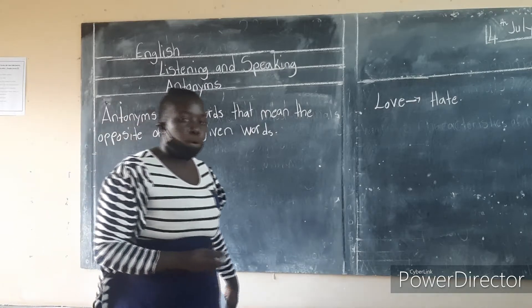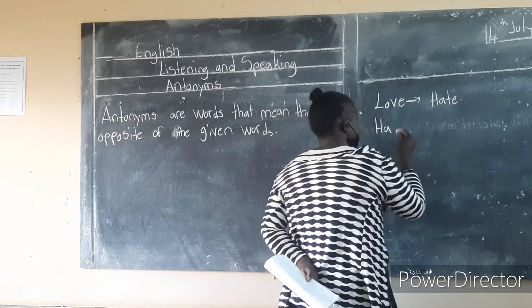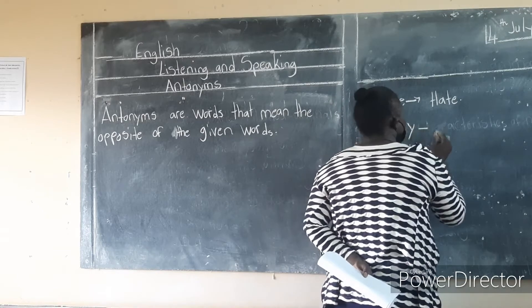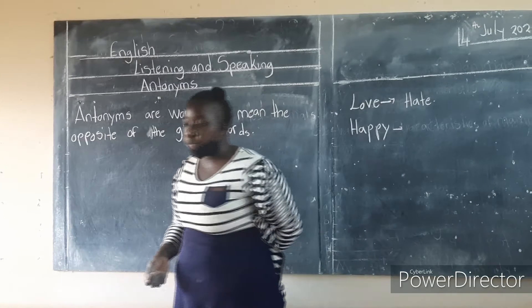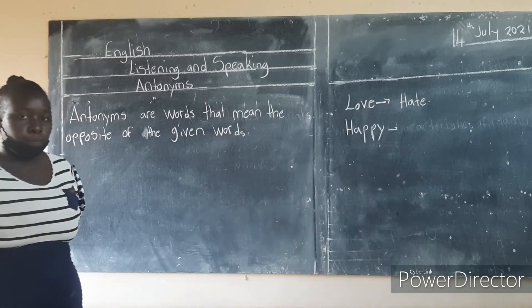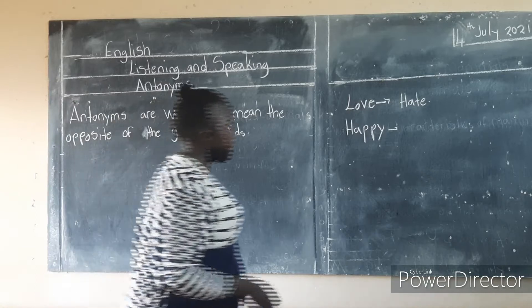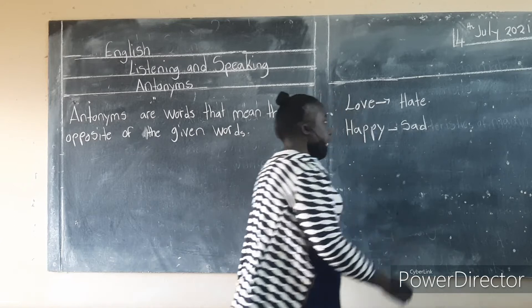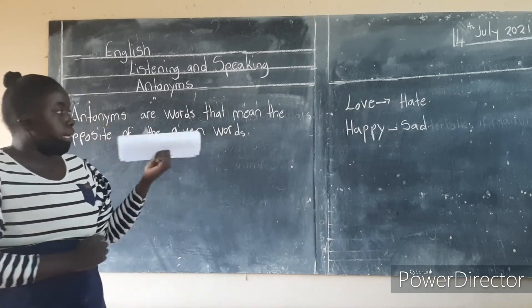Another one: what is the antonym of happy? What is the opposite of happy? Very good — the antonym of happy is sad. The opposite of happy is sad.